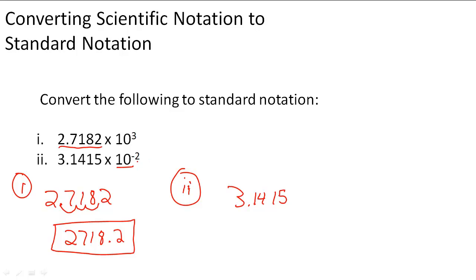And when we notice that 10 to the negative 2, what this means is we're actually dividing by 10 twice. So we're moving the decimal point to the left two spaces. One, two.